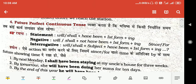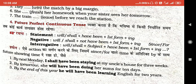Future Perfect Continuous Tense. यह व्यक्त करता है कि भविष्य में किसी निश्चित समय तक कोई कार्य लगातार होता रहेगा — किस समय तक कार्य होता रहेगा, future में शुरू होगा और कब तक होता रहेगा — इसको show करने के लिए Future Perfect Continuous Tense use करते हैं।